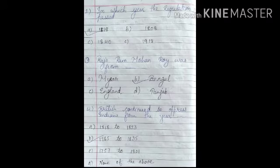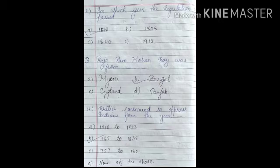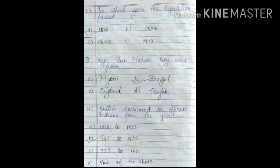The third MCQ: Raja Ram Mohan Roy was from — Mysore, England, Punjab, or Bengal? The answer is Option B, Bengal. Raja Ram Mohan Roy was from Bengal. The fourth MCQ: the British continued to oppress Indians from which years? The answer is Option B — 1765 to 1835.